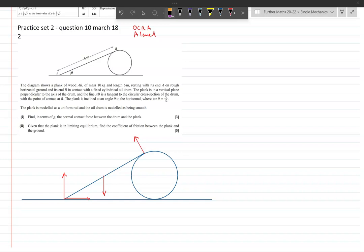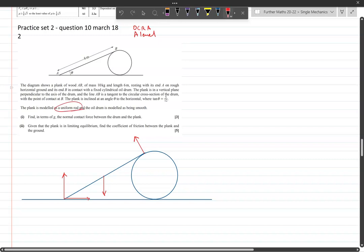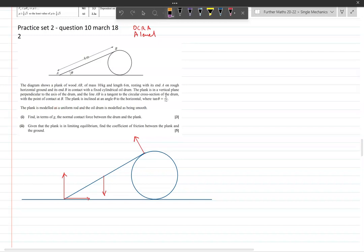The key information that we're given is it's uniform. We're told that this rod resting on this drum here is uniform, which means the plank is modeled as a uniform rod, so we can put the center of mass in the middle. So that's 3 meters, this is 3 meters.